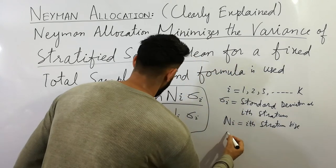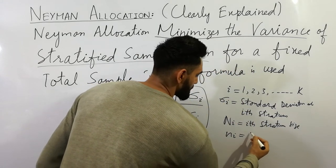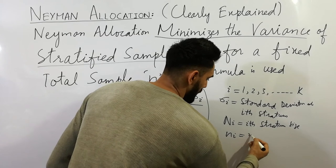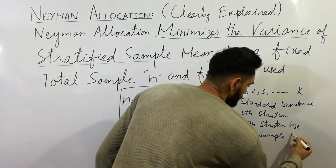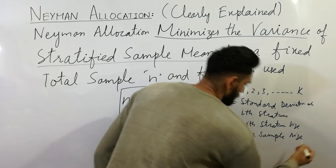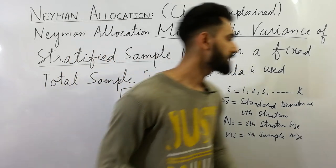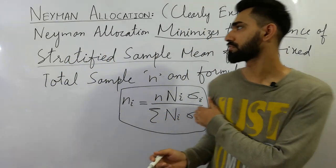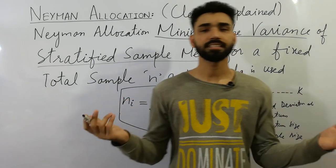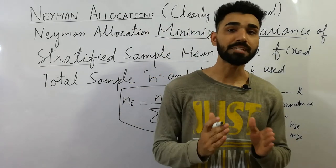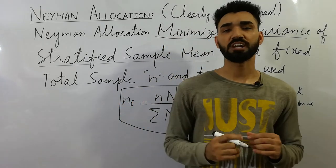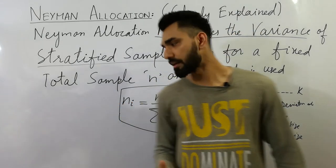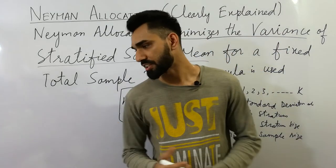So this is the Neyman allocation. I hope you have cleared the concept about what is Neyman allocation. Neyman allocation always minimizes the variance of stratified sample mean for a fixed total sample size, and the formula is used.